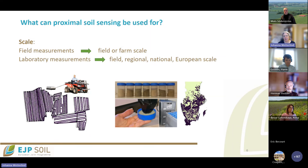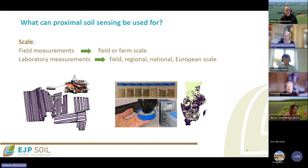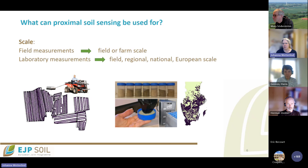Regarding scale, proximal sensing is mainly used for field or farm scale to get quite detailed information on the soil. If you also include laboratory measurements, the scale can extend from field up to European scale. But for field applications, it is usually field or farm scale.